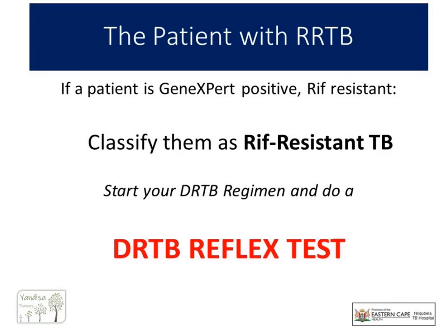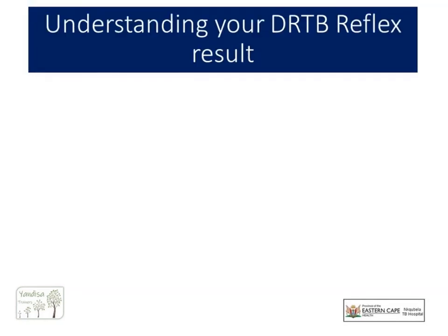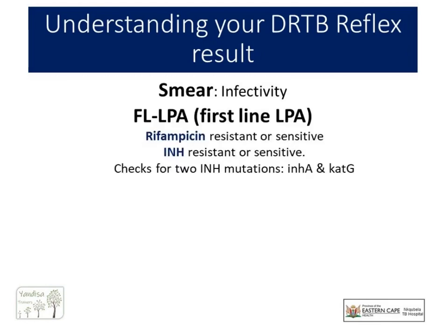The DRTB reflex test is available at all NHLS laboratories. This DRTB test includes all of the following. Firstly, a smear, which tells us how infective our patient is. Secondly, a first-line line-probe assay — a PCR test that specifically tests for both rifampicin and INH resistance, and also establishes the presence of two mutations that select specifically for INH resistance. These are called inhA and katG.